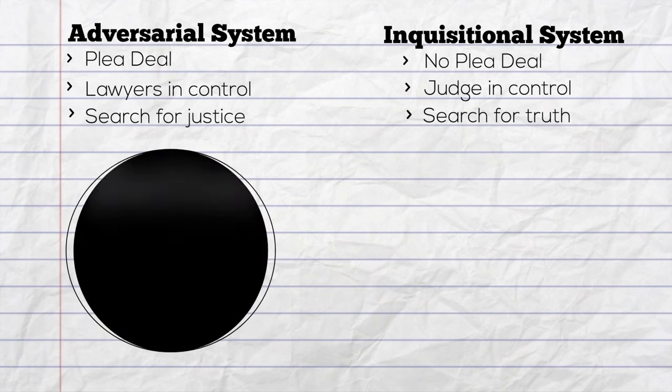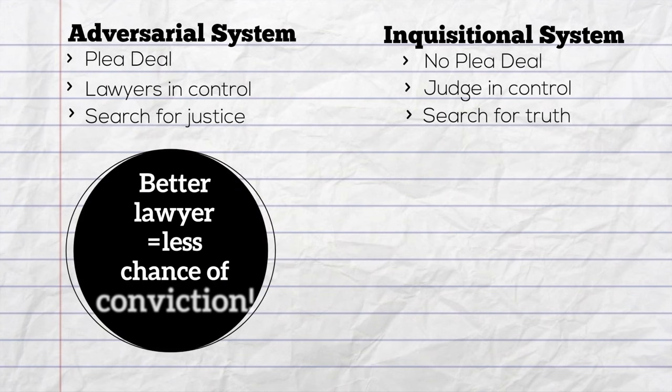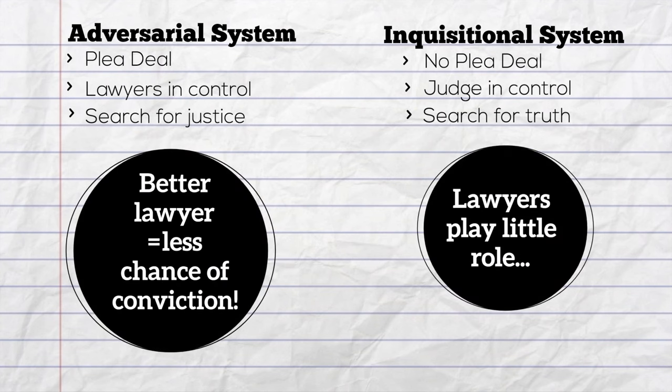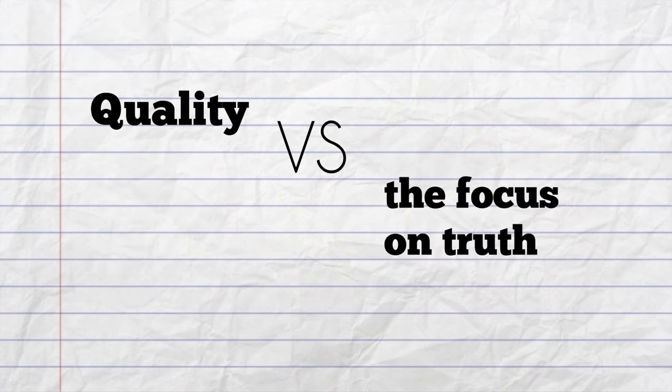In the adversarial system, a better lawyer means a lesser chance of a conviction, whereas in the other system, lawyers play a little role, meaning the quality versus the focus on truth.